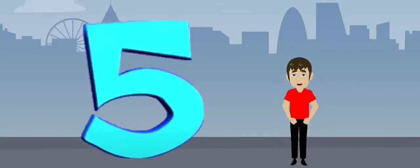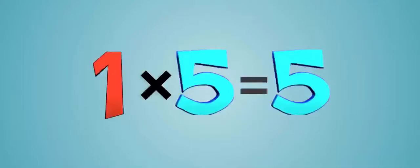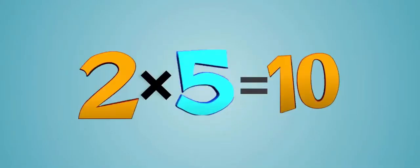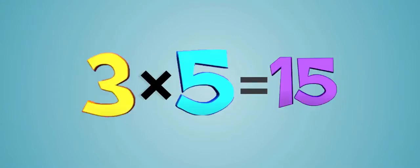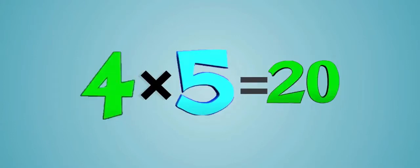5 times table. 1 times 5 is 5, and 2 times 5 is 10. 3 times 5 is 15, 4 times 5 is 20.